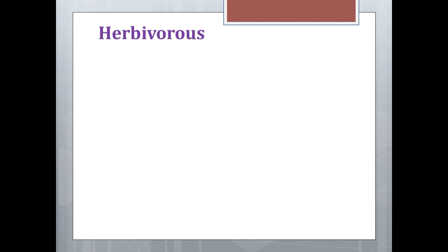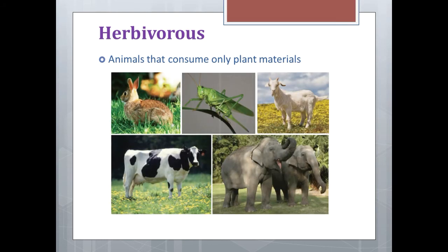Herbivorous are animals that consume only plant materials. Examples: rabbit, grasshopper, goats, cows, and elephants.